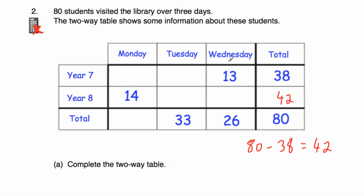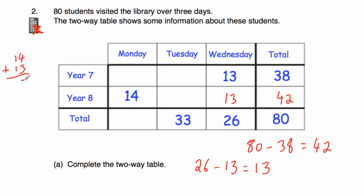Now let's find the number of year eights that visit on Wednesday. Altogether on Wednesday, 26 students visit the library and 13 of them are in year seven, so 26 take away 13 equals 13 — so 13 year eight students visit on Wednesday. Now since there are 42 year eight students altogether, 14 plus 13 equals 27 visited Monday and Wednesday. So 42 take away 27 equals 15 year eight students visited on Tuesday.